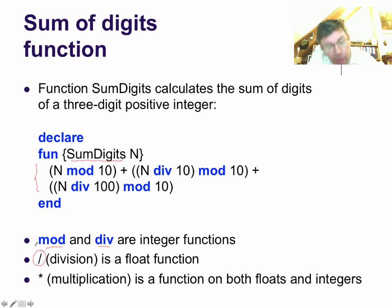The slash for division is a floating point function. And the multiplication, the asterisk, is in fact overloaded. There are two operations with the same symbol, an asterisk. You can either give it two integers and get an integer, or two floats and get a float.